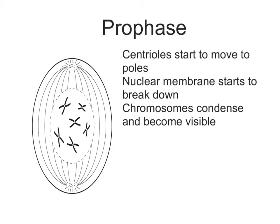In prophase, you can see that the centrioles have started to move to the poles of the cell. Spindle fibres have started to form and the nuclear membrane has started to break down. But the clearest indication that we're in prophase is that the chromosomes have condensed and they've become visible. You can clearly see that they are now made up of two sister chromatids held by a centromere.